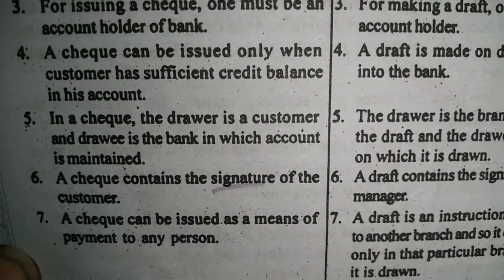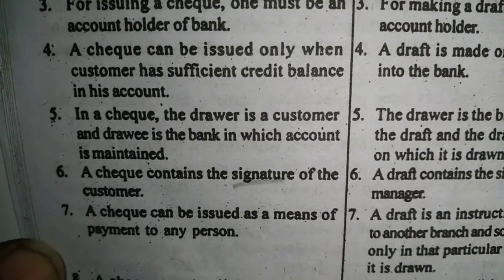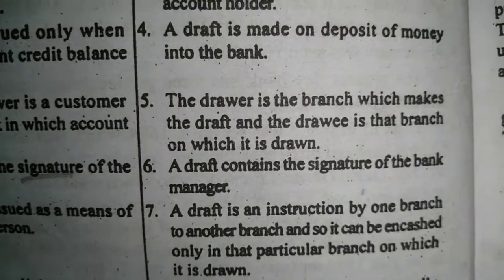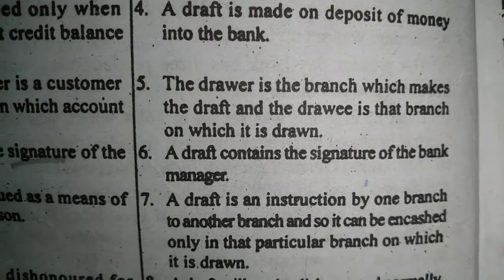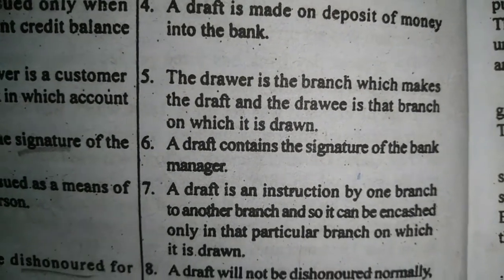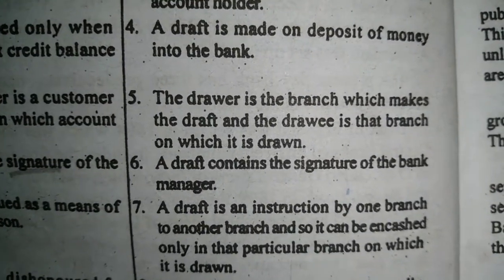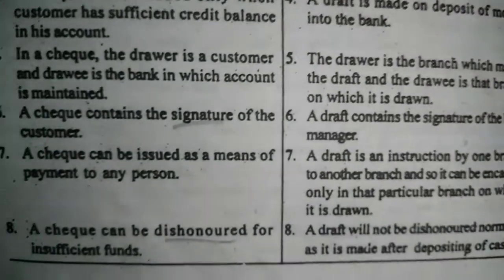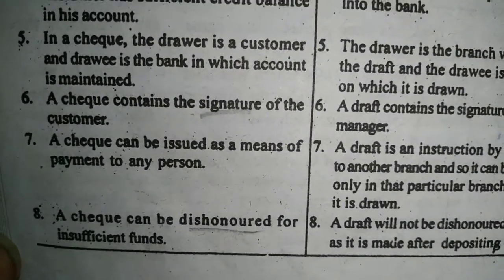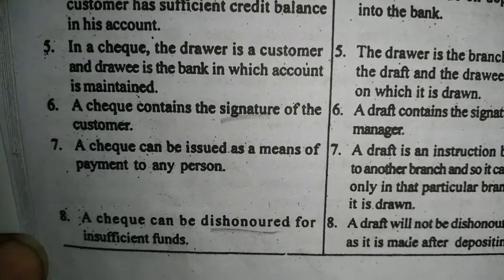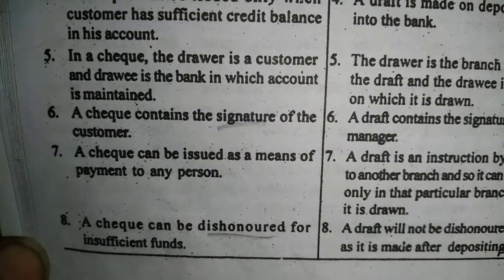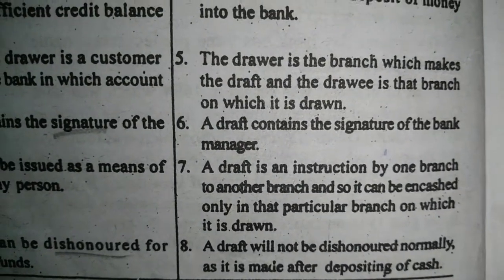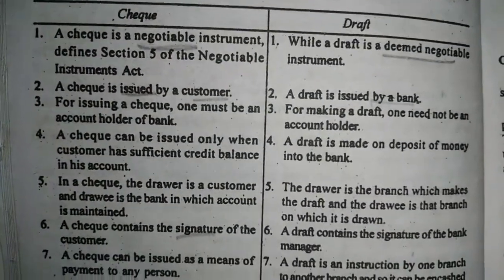A cheque can be issued as a means of payment to any person. A draft is only on instruction by one branch to another branch and can be encashed only at a particular branch. A cheque can be dishonored, whereas a draft will not normally be dishonored, since it is made only on depositing cash. This is the difference between the cheque and the draft — 8 points discussed.